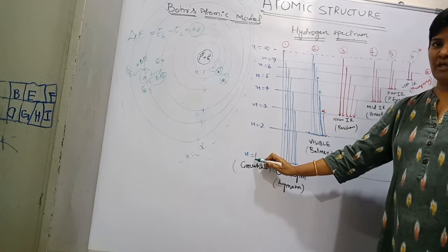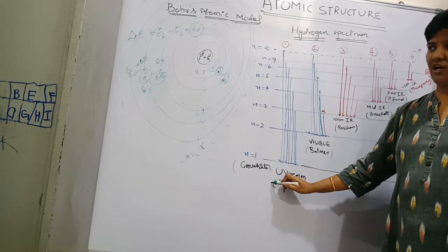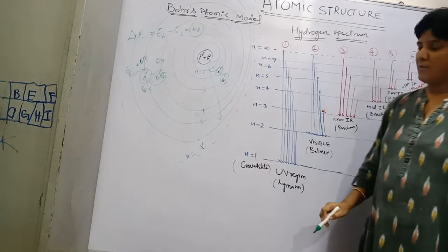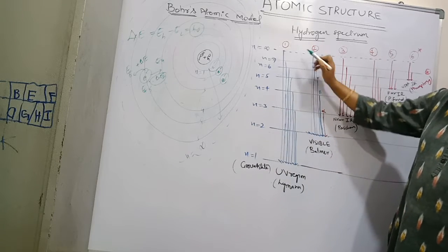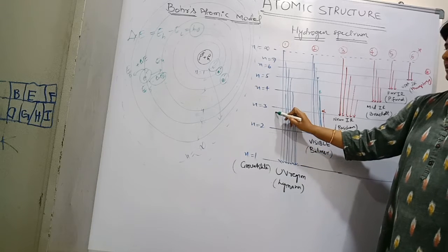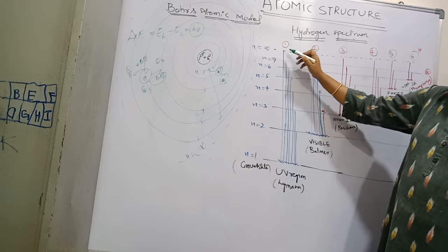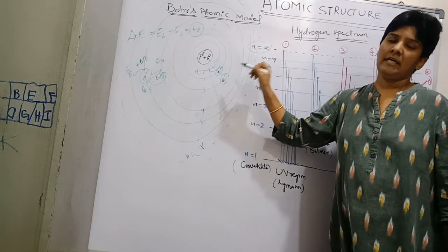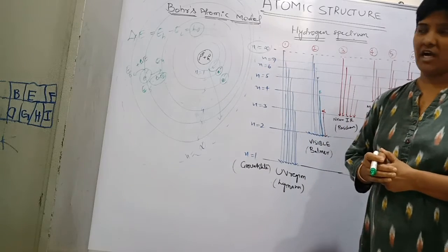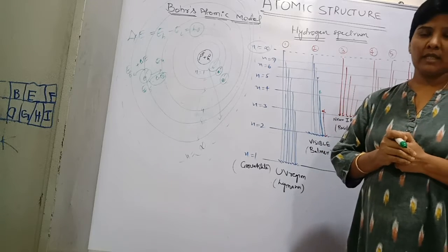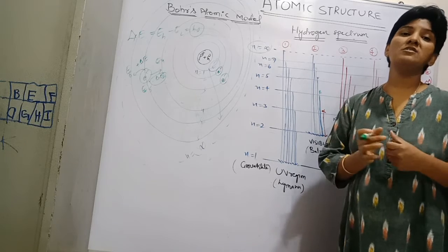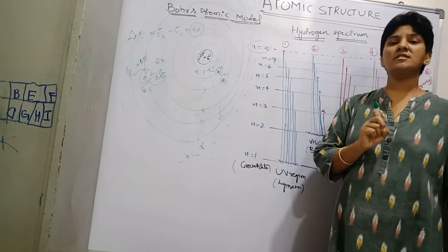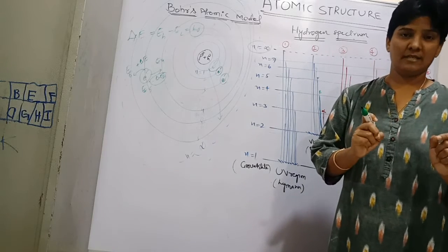Here I have drawn the hydrogen spectrum on this board. n=1 is the first orbit, which is the ground state of a hydrogen atom. Moving outward from the nucleus, the n value gradually increases and the energy increases: n1 < n2 < n3 < n4, and so on up to infinite orbits. When hydrogen gas is heated or electrically discharged, the H₂ molecules first dissociate into H atoms, giving double the number of hydrogen atoms, each containing one electron.